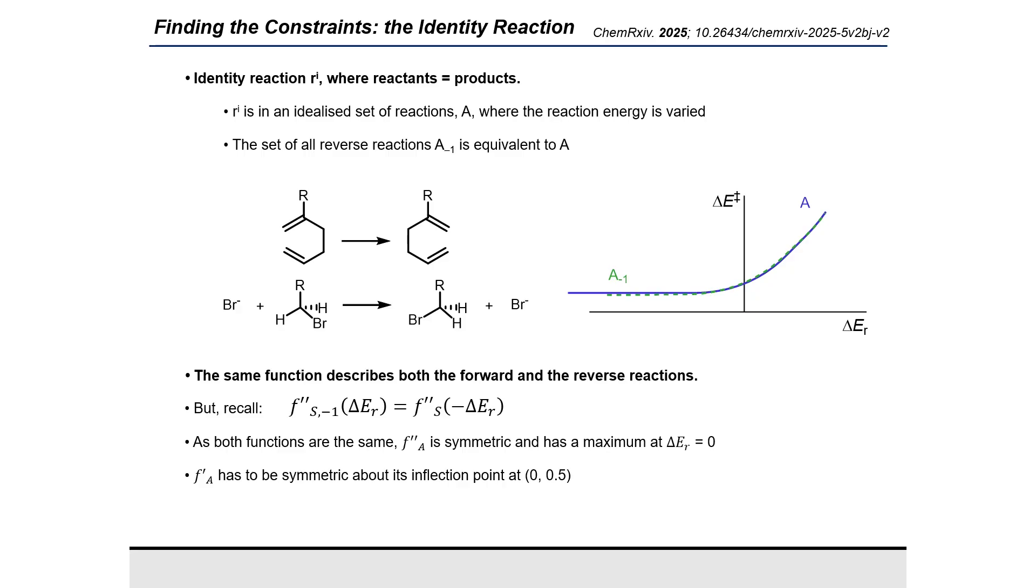If we now recall that the curvature of the forward process was the mirror image of that of the reverse process, seeing as the functions are the same, this means that the curvature itself is symmetric about the y-axis and reaches a maximum when the reaction energy is 0.